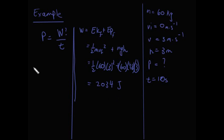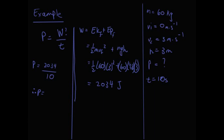Plugging back into our power formula, P equals 2,034 joules divided by the time of 10 seconds. Therefore, the power output of the boy traveling at 3 meters per second up a 3-meter flight of stairs is equal to 203.4 watts. Note: watts is written out in words to avoid confusion with W for work, though W is the standard unit symbol.